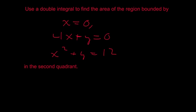Use the double integral to find the area of the region bounded by x equals 0, 4x plus y equals 0, and x squared plus y equals 12 in the second quadrant.